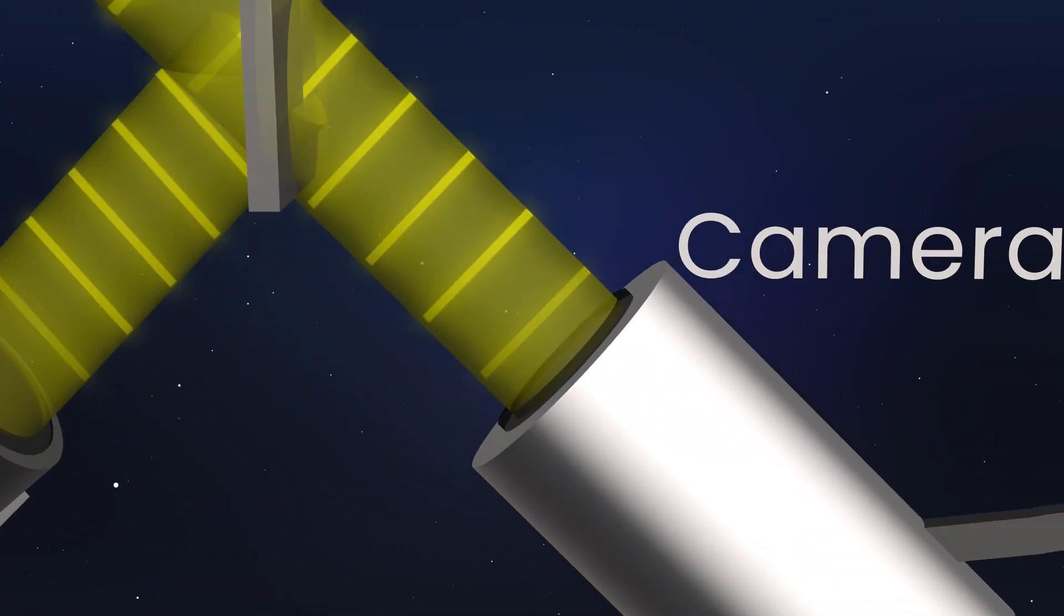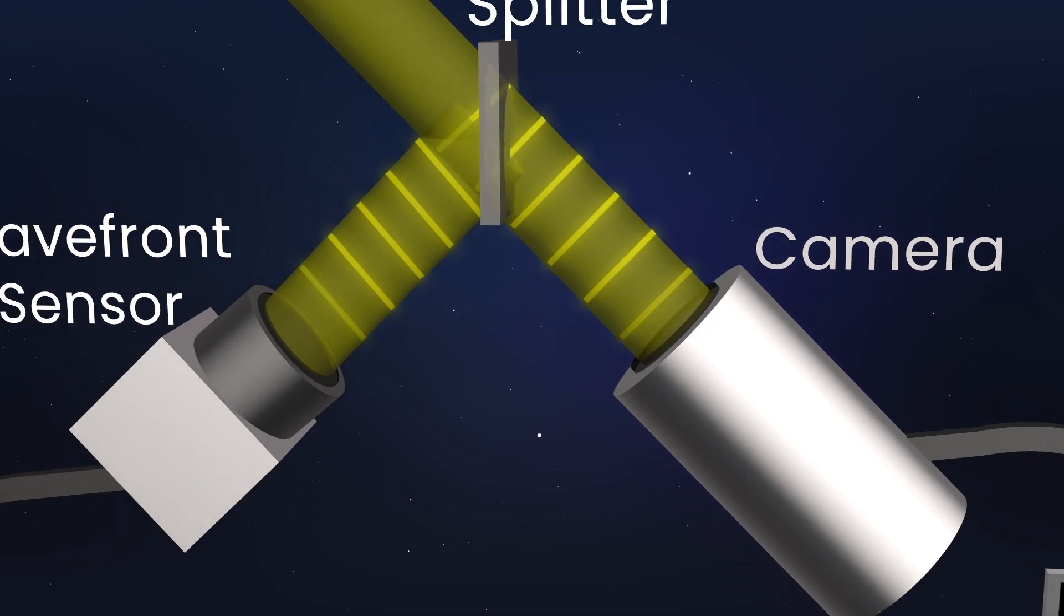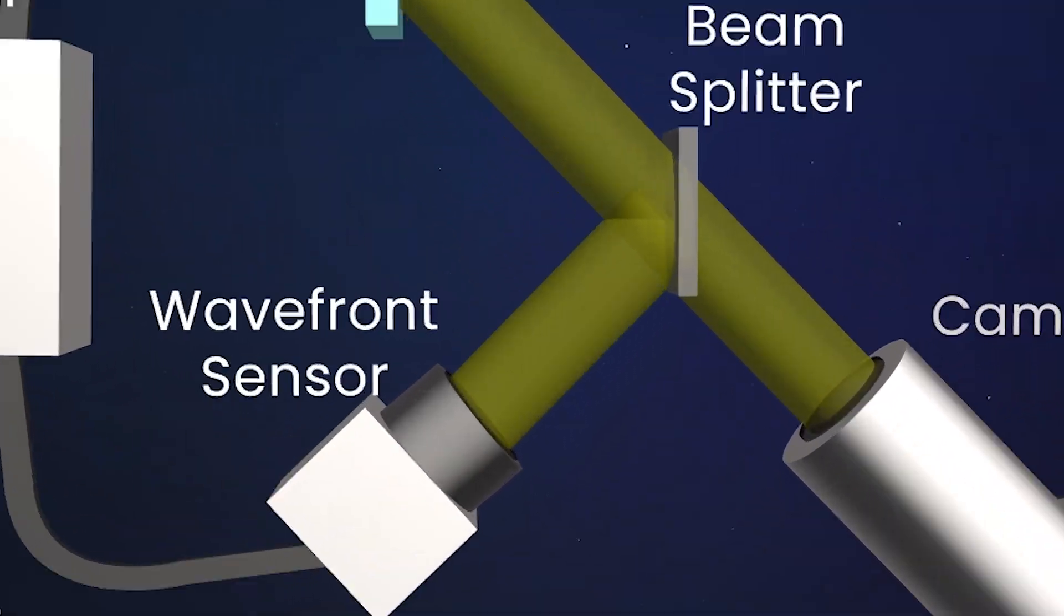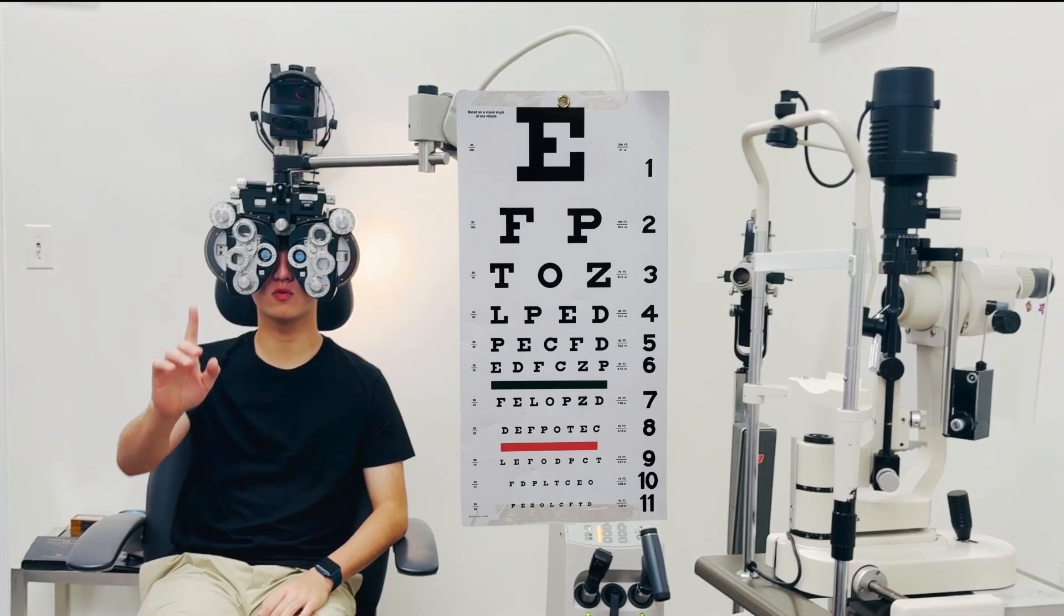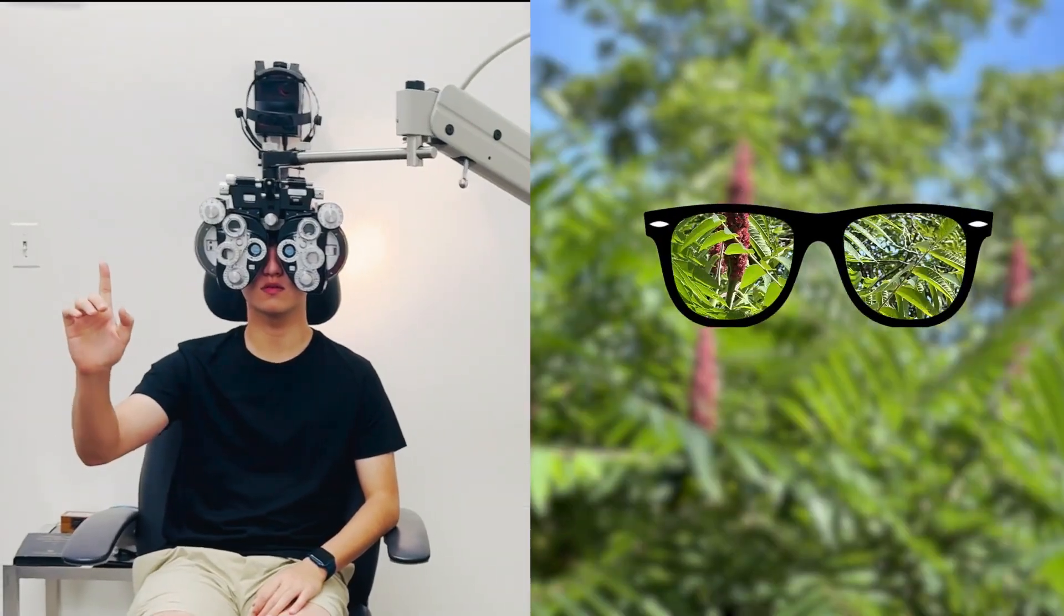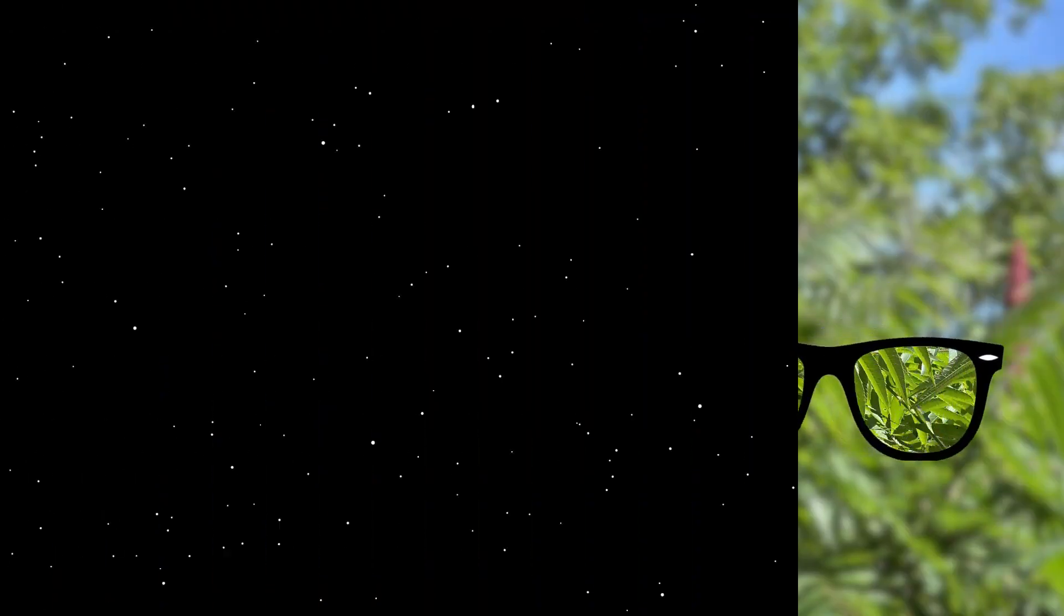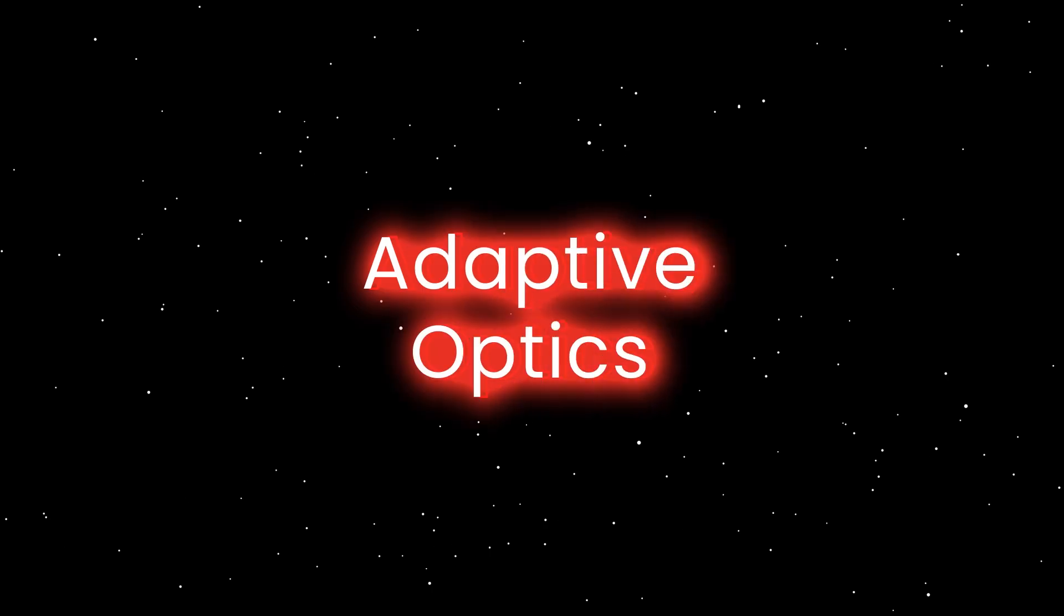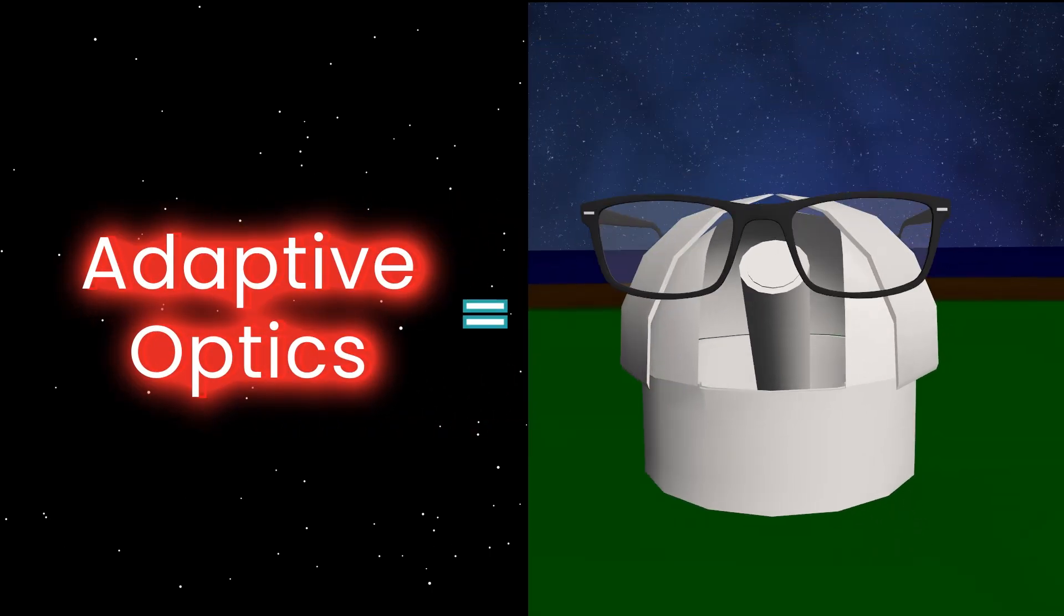This all happens in a few milliseconds, so any changes in the atmosphere are constantly being accounted for. Think about it like this: glasses can correct human vision with the right prescription, just like how the sodium star calibrates adjustments for the telescope. Adaptive optics is essentially just glasses for a telescope.